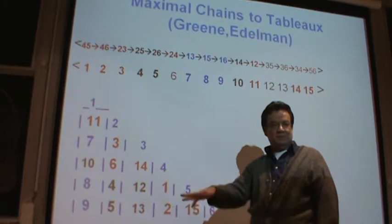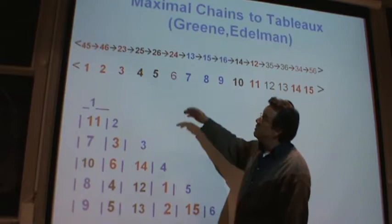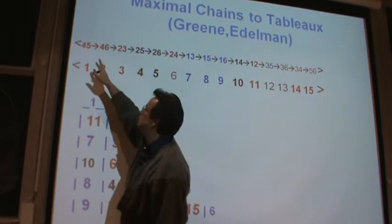Now what we are going to do is we are going to take a maximal chain. Remember, these numbers are just the flips that you make from the identity: flip for five, flip for six, and so on.